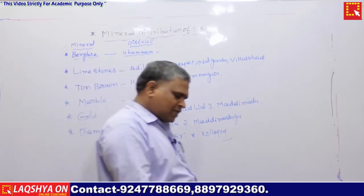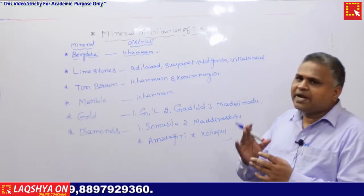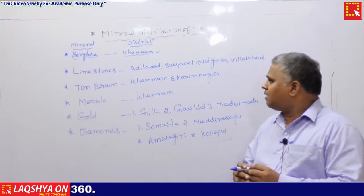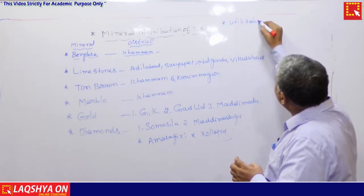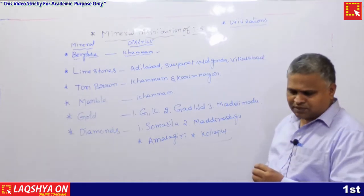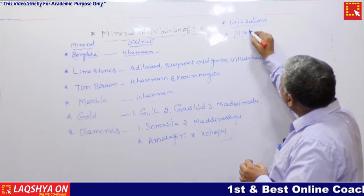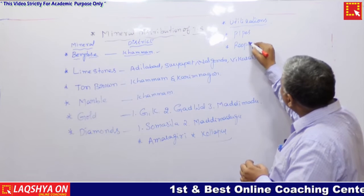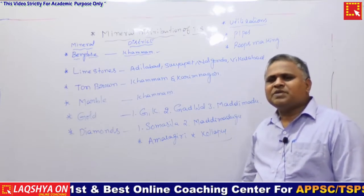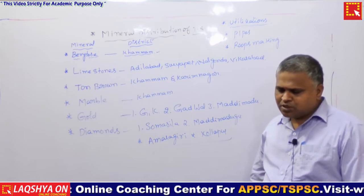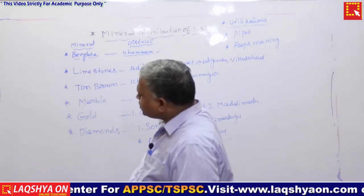These are important minerals with their available places or districts. Barites reserves are sufficiently available in Kammam district. The uses of barites include manufacturing pipes and ropes. The Vishaka Asbestos Mining Industry was established at Patan Chiru in Sangareddy district.